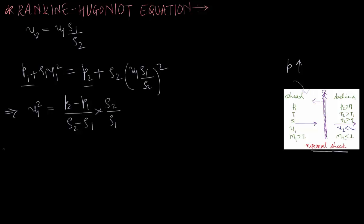Similarly, we can write down the equation for u2², which will be equal to (p2 minus p1) times (rho1 by rho2) divided by (rho2 minus rho1) times (rho1 by rho2). So these are the equations for u1² and u2².